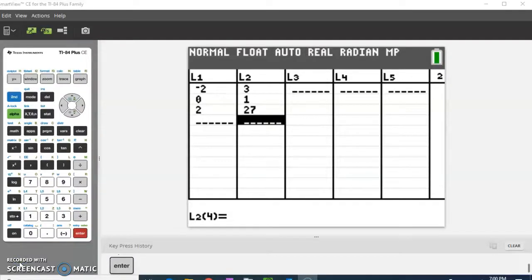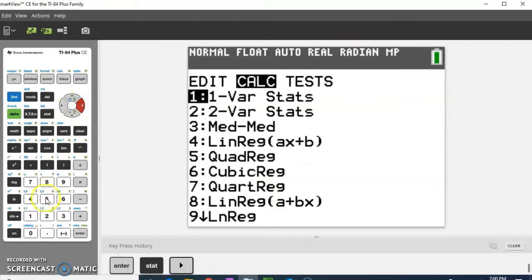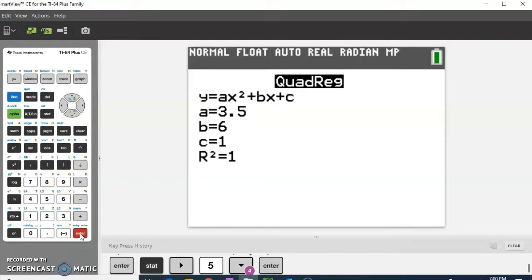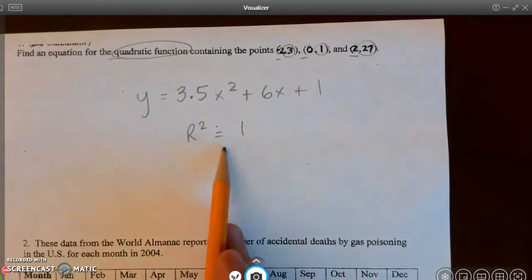So I went to stat and edit. I entered the data in the calculator. Now I'm going to do the stat and calc. And I'm going to go down to choice 5, quadratic regression. And I'm going to calculate my equation. And then I will write that down. And I want you to notice that the r squared is 1.